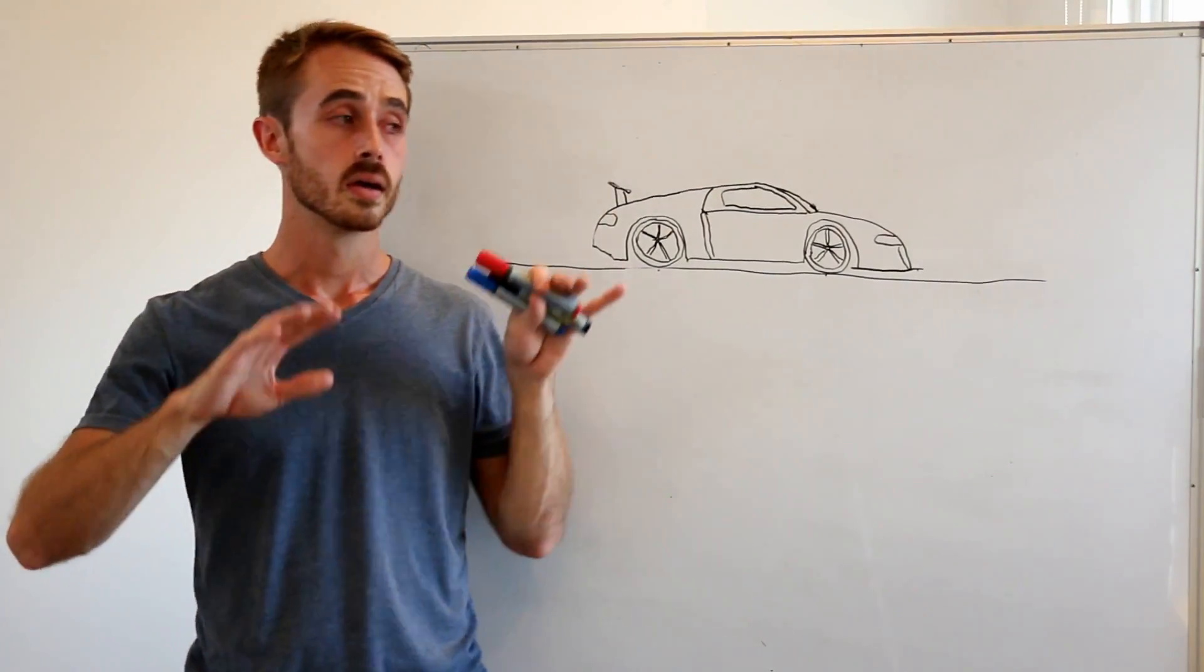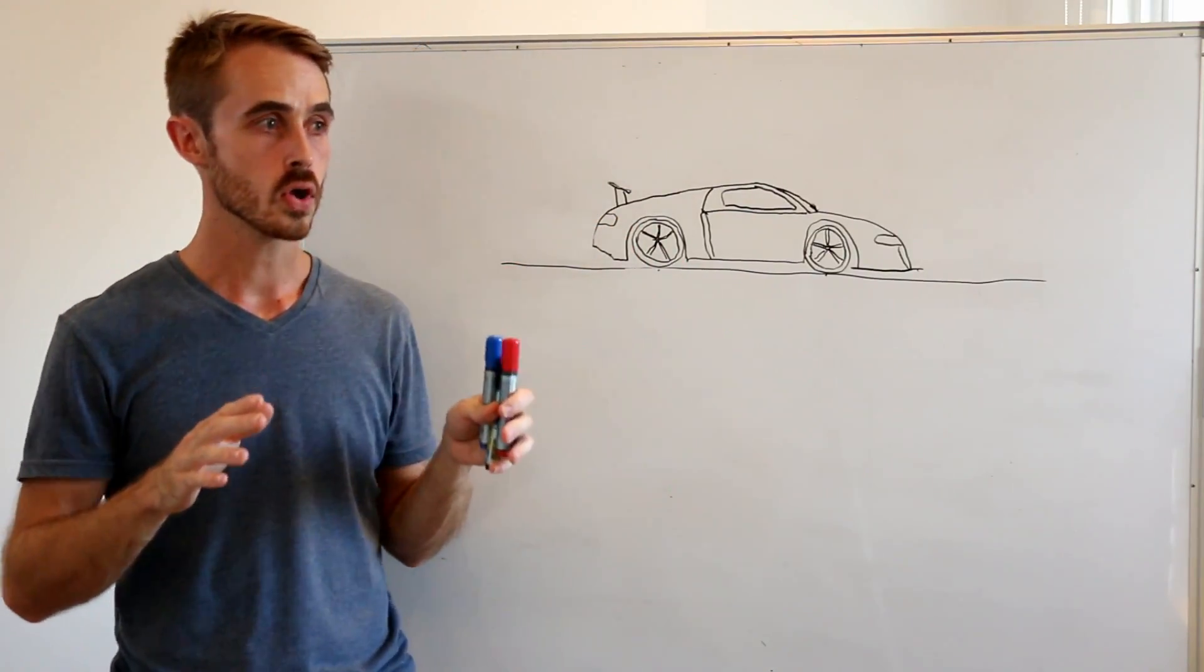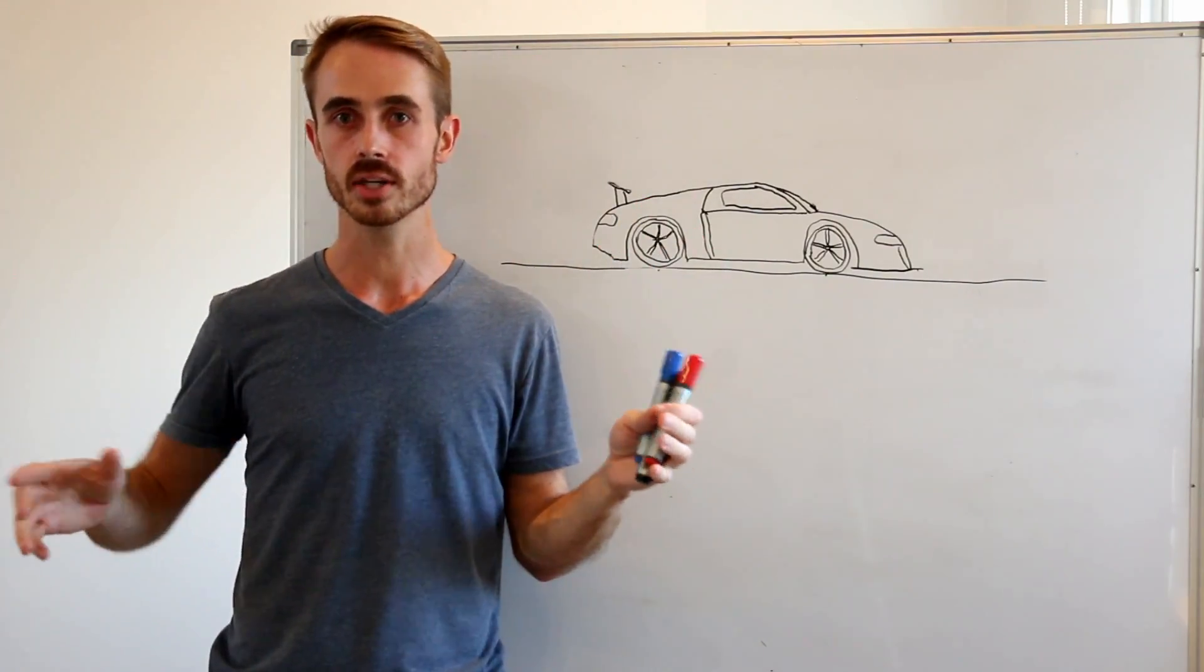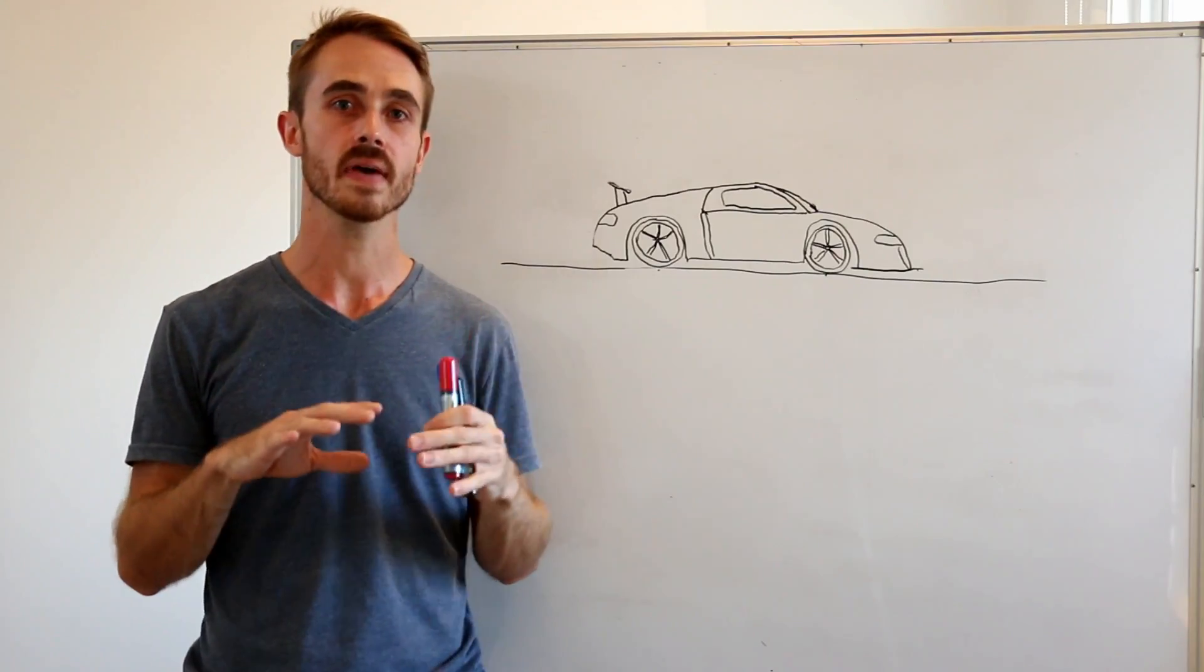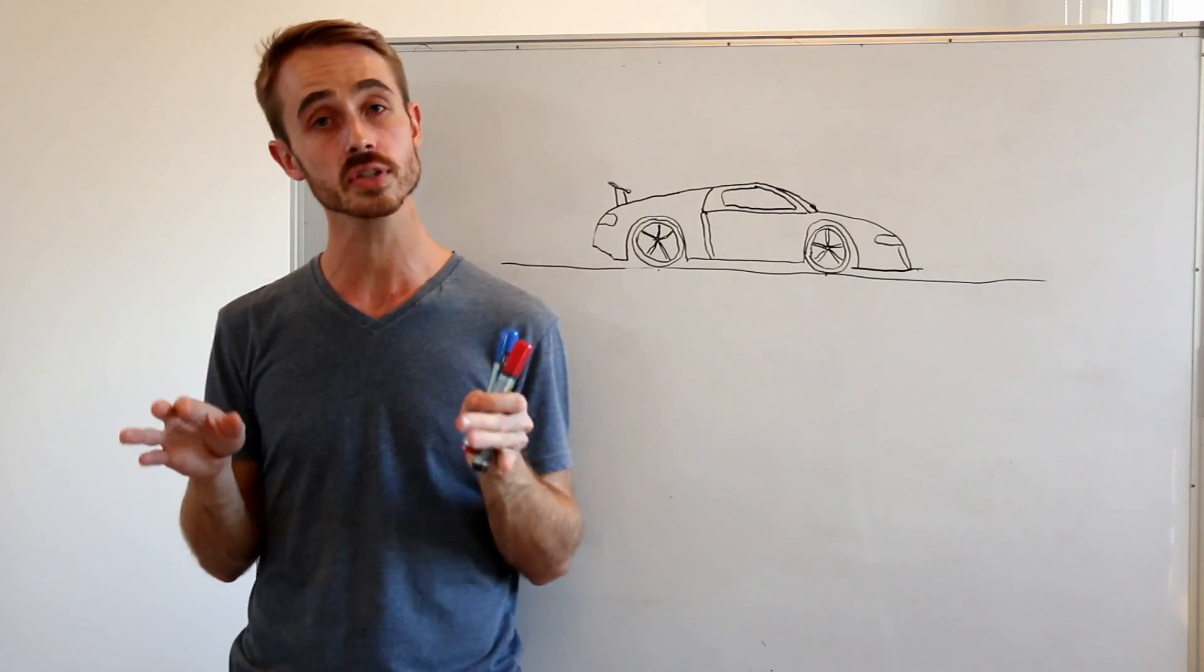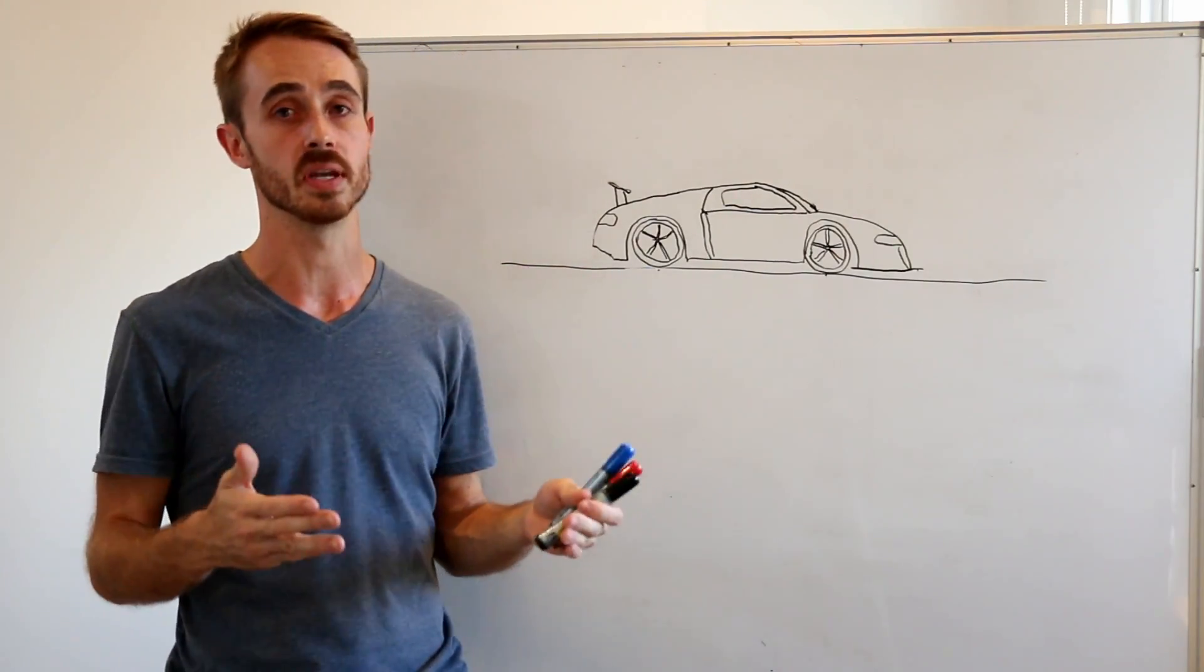To start off with, if you've watched my video on power to weight and how that affects acceleration, you know that weight doesn't really affect your acceleration as long as you have the power to match. In fact, a heavier and more powerful car will generally speaking have a higher top speed. So your first inkling would be to go, why not add the hybrid system in there, even if it's a bit of added weight.